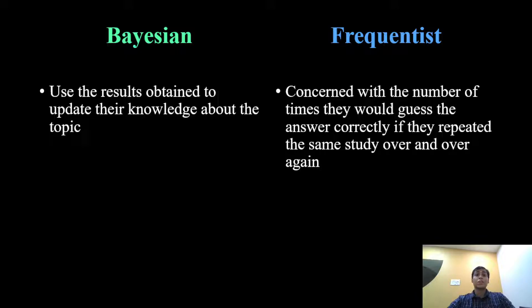The frequentist analysis is based on the notion that if they were to repeat the same study over and over again, how many of those times would they guess the answer correctly if they did their analysis frequently? Hence their name, frequentists. This is also a partial explanation of the intuition behind the significance level, p-value, and statistical power, which I have already talked about in previous videos.